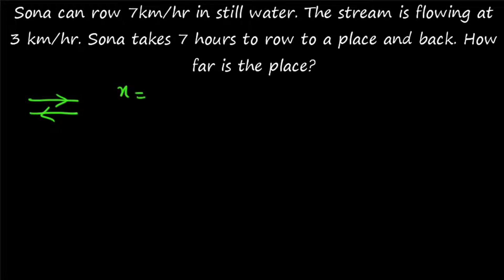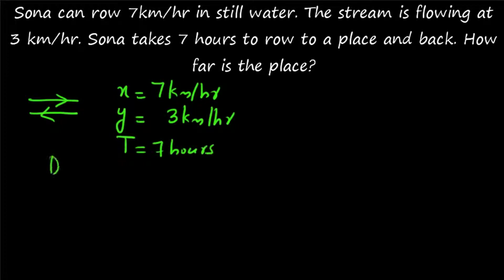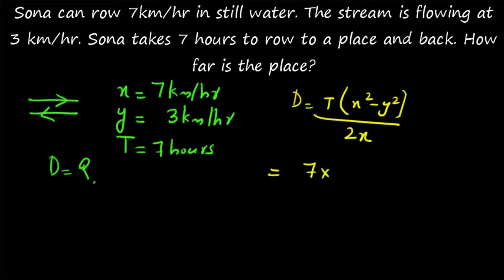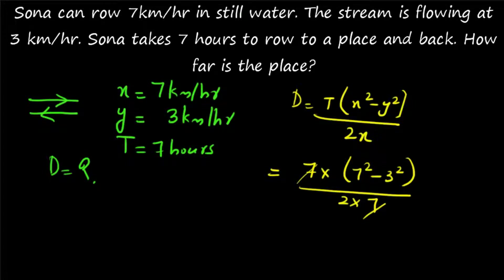Here x = 7 km/h, y = 3 km/h, and t = 7 hours. Applying the shortcut formula: d = t(x² - y²) / 2x = 7 × (7² - 3²) / (2 × 7). The 7s cancel, and 7² - 3² = (7+3)(7-3) = 10 × 4 = 40. So d = 40 / 2 = 20 kilometers. The place is 20 kilometers away.